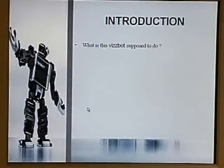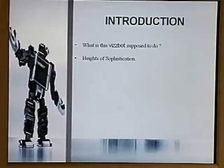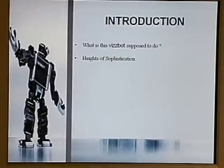The introduction: what is this VizBot supposed to do? It has a GPS and a camera. It is supposed to take input from the GPS and input from the camera, present both the information, and then decide on the way it has to go to reach the destination.